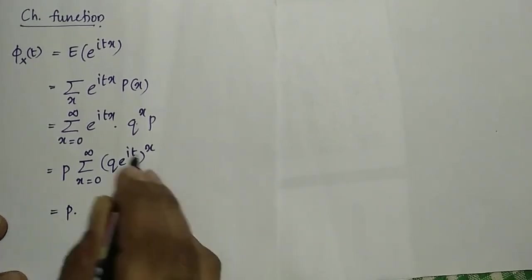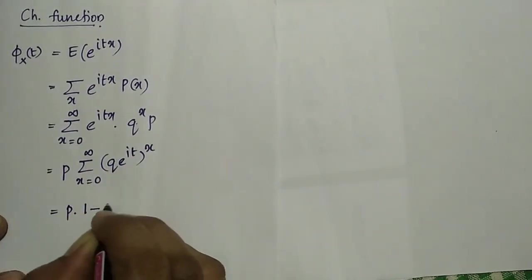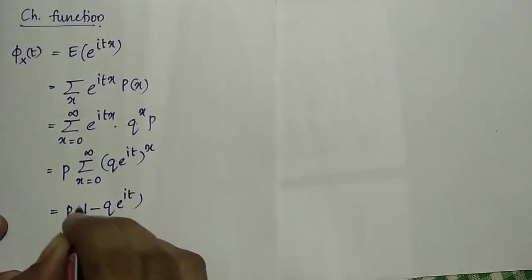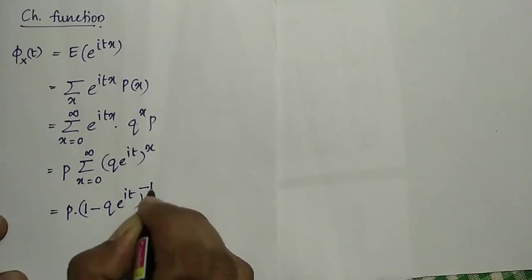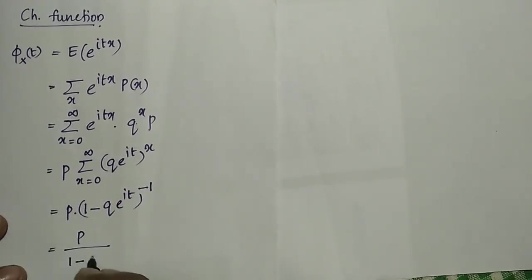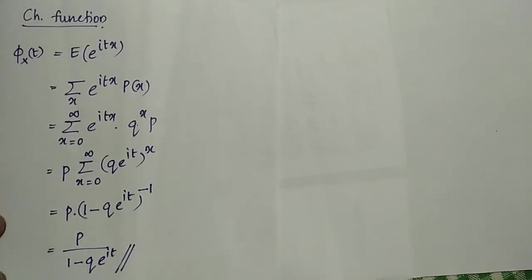This is the characteristic function of a geometric distribution, which equals p times summation of (q e to the it) raised to x, giving p divided by (1 minus q e to the it). This is the characteristic function of a geometric distribution.